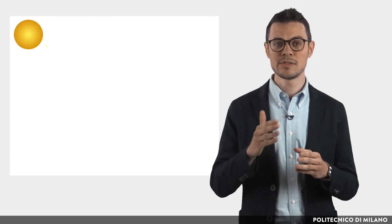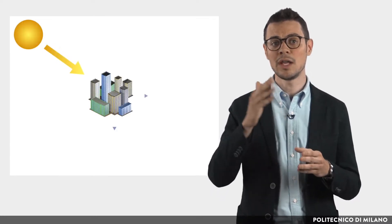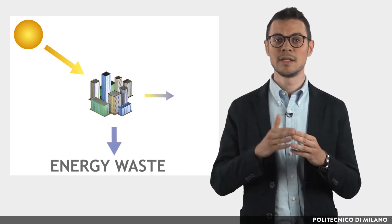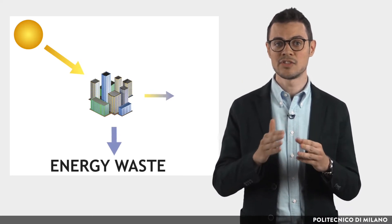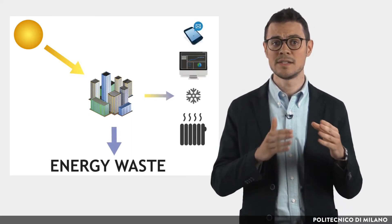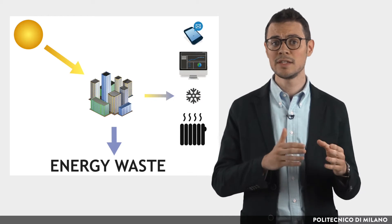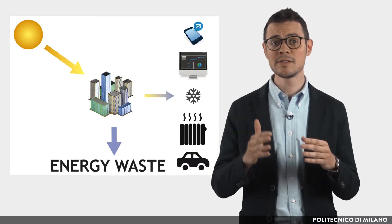This process allows the urban metabolism to run by means of thermodynamic transformations that take place at all levels: individual devices such as domestic appliances, systems for heating and cooling buildings, cars and so on. Of course, like any thermodynamic system, the urban energy system can be more or less efficient.